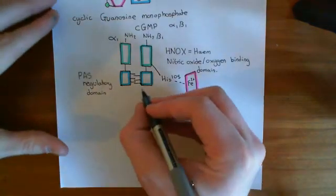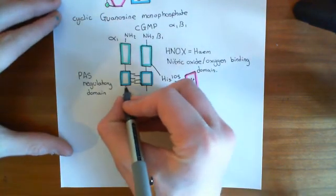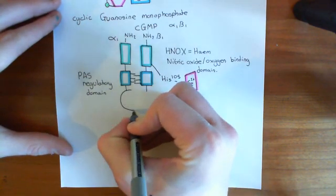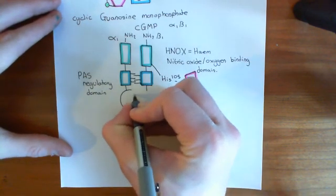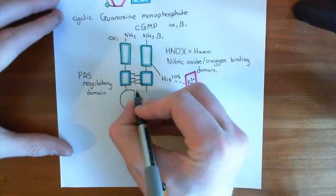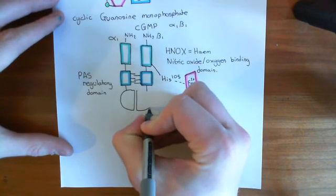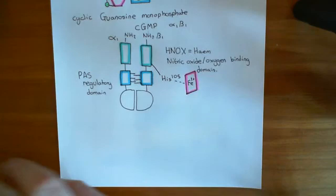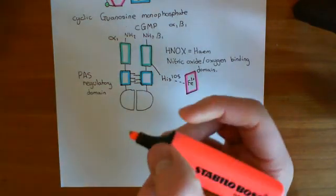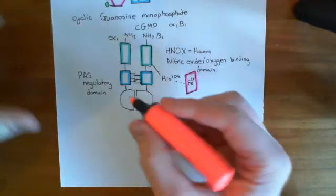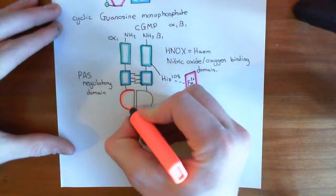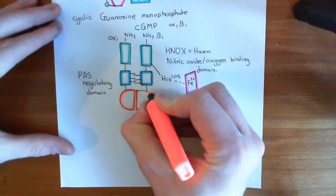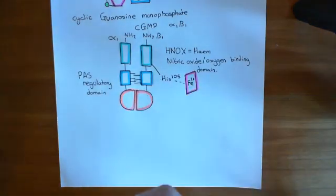Further down, what you have is the catalytic domain. Each of the two subunits has a catalytic domain, and they dimerise together to make the whole guanylate cyclase enzyme — shown here in red.